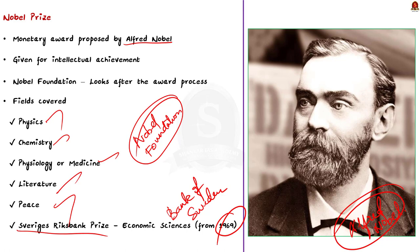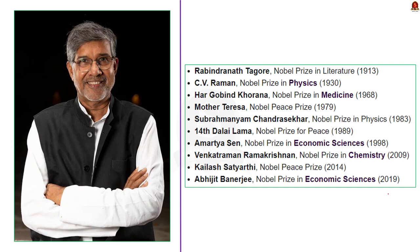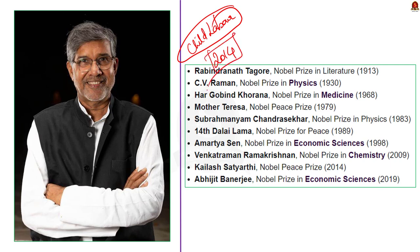Numerous Indians have won the Nobel Prize. The first Indian to win was Rabindranath Tagore, who won the Nobel Prize for Literature in 1913. Sir C.V. Raman won the Nobel Prize for Physics in 1930 for his work on the scattering of light. Kailash Satyarthi, an Indian social reformer who campaigned against child labour, was the co-recipient of the Nobel Peace Prize along with Malala in 2014. A complete list of Indian Nobel Prize winners is provided on screen for your reference.